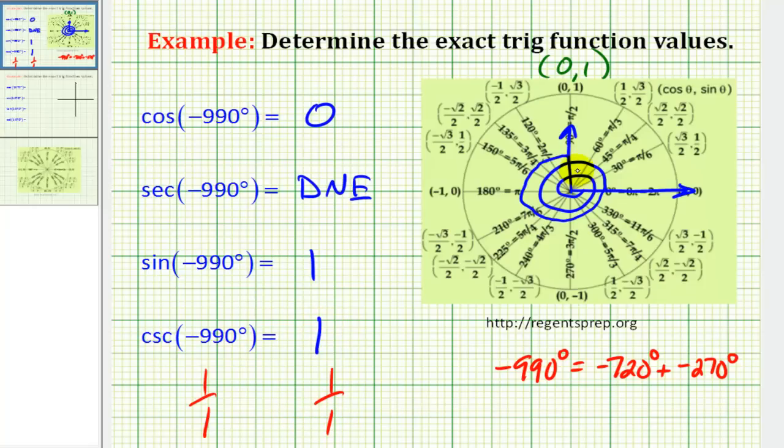And in this problem, it was a good idea we didn't use reference triangles, because if we have a quadrantal angle where the terminal side is along one of the axes, we can't sketch a reference triangle. But in the next example, we will take a look at using reference triangles.